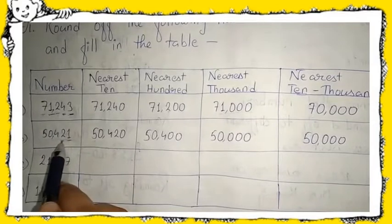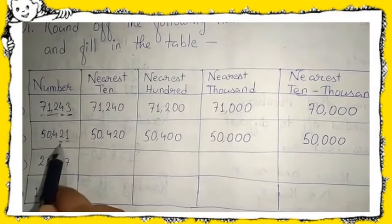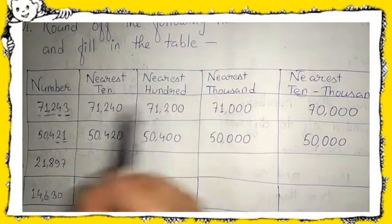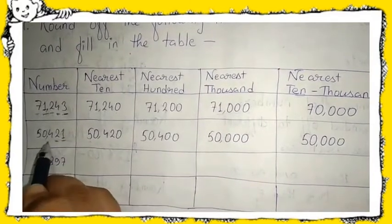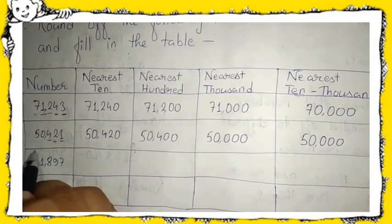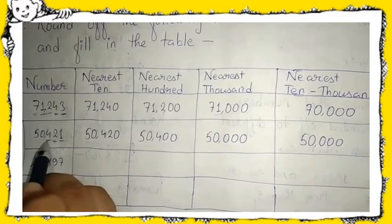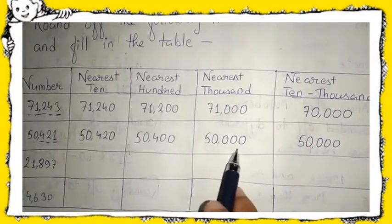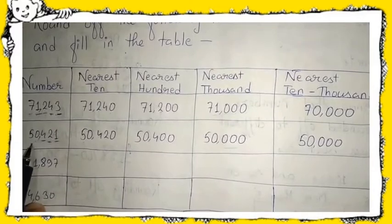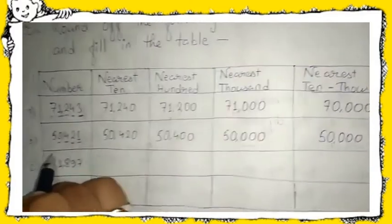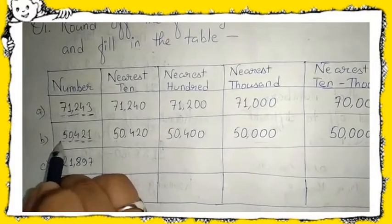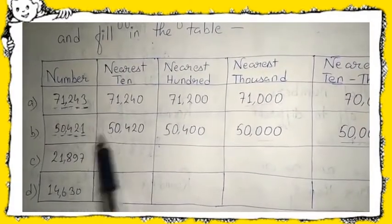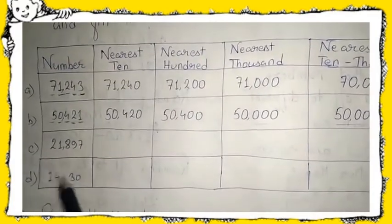For the nearest hundred, check the tens place — here two is there, which is again less than five, so you cannot do anything, so your answer will be fifty thousand four hundred. For the nearest ten thousand, look at the thousands place — it is zero, so you cannot do anything, so it will be fifty thousand again. In question one, I have done parts A and B; your task is to do C and D as homework.